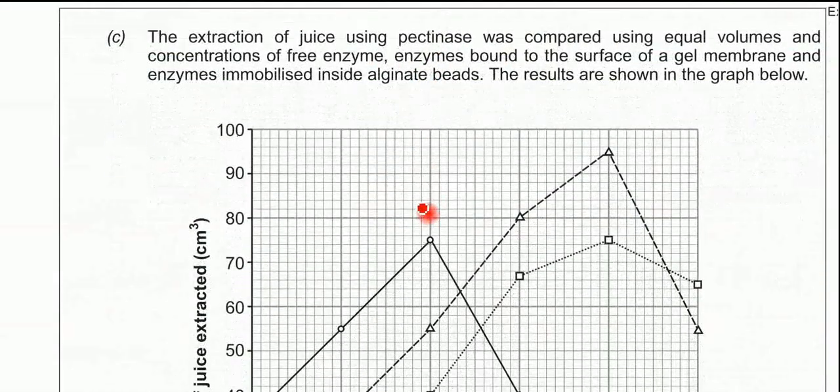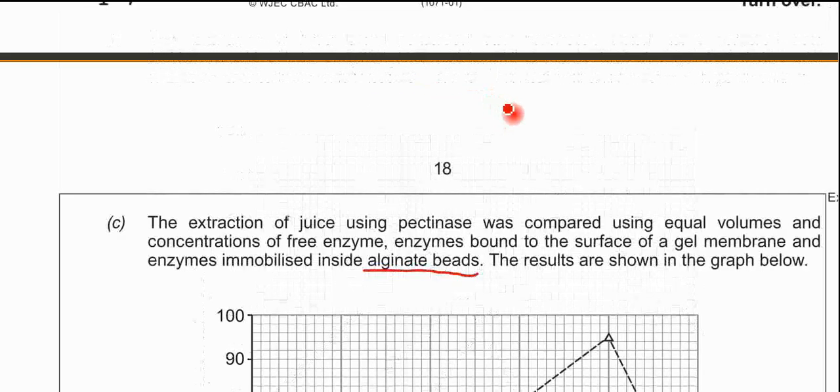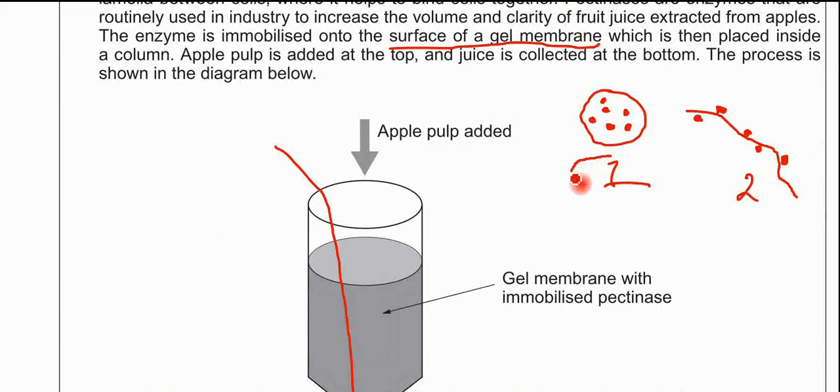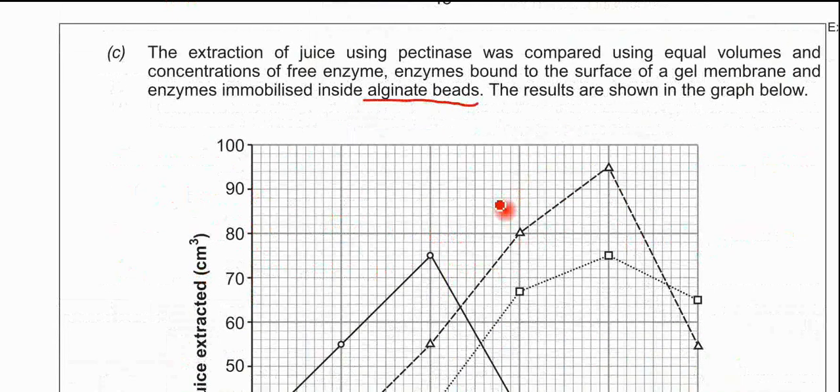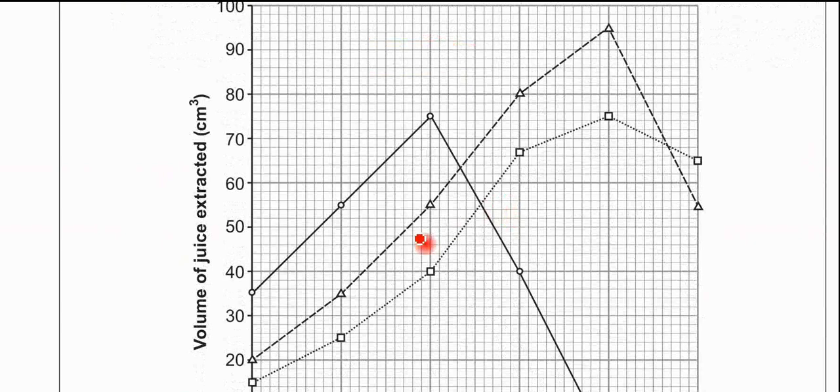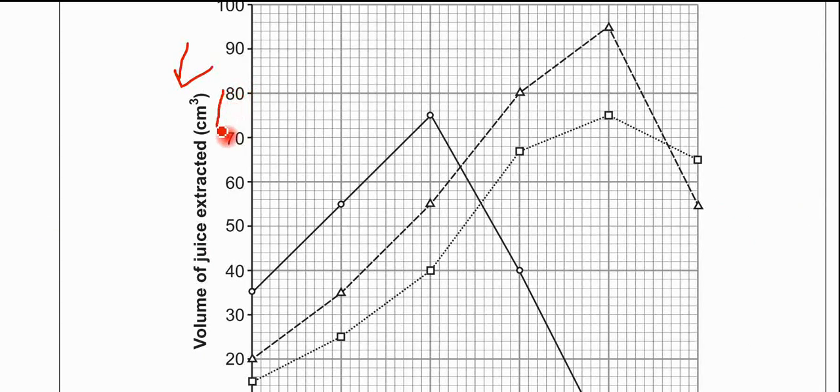Part C: the extraction of juice using pectinase was compared with equal volumes and concentrations of free enzyme, enzyme bound to the surface of a gel, and then enzyme immobilized inside alginate beads. That goes back to the drawing I made earlier. Number one there is the alginate bead example. The results are shown in the graph below. If we look at the y-axis here, the scale is volume of juice extracted in centimeters cubed. It's a volume scale.